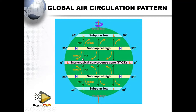As the Earth rotates in an anticlockwise direction, the winds end up being deflected. So those winds originating from one side shall be referred to as the Easterlies, and the ones coming from the other side are referred to as the Westerlies.